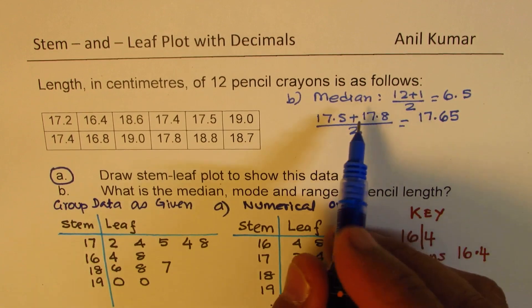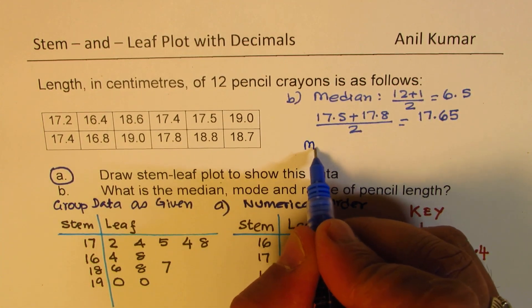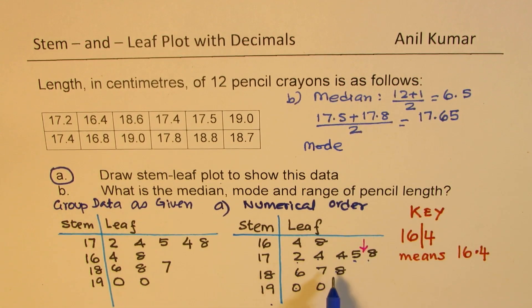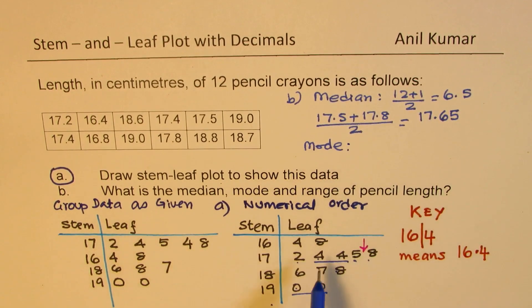Okay, let's look into the mode now. So in this case how many values are repeating in the leaf? That is what you need to see. So in any row we have these two fours repeating, and here we have two zeros repeating. That means we have two modes in this case.